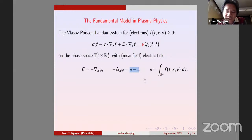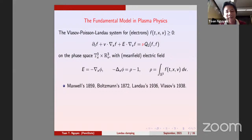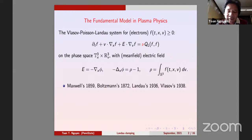Some historical remarks: Maxwell gave birth to what we now call kinetic theory — a theory for a function depending on x and v on a phase space, as opposed to fluid equations which depend only on position with velocity as an average quantity. Boltzmann wrote down the collision operator for describing rarefied gases.